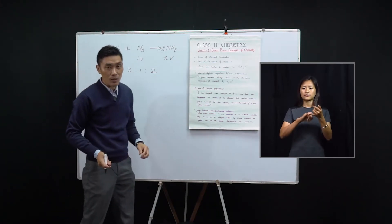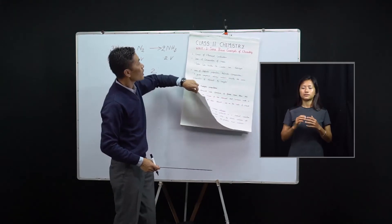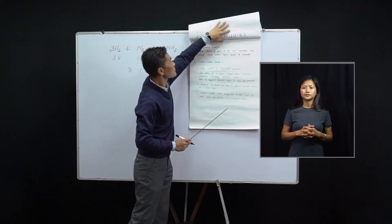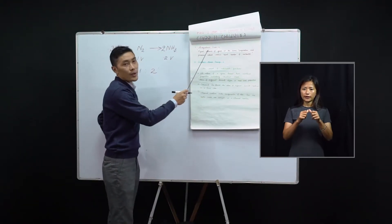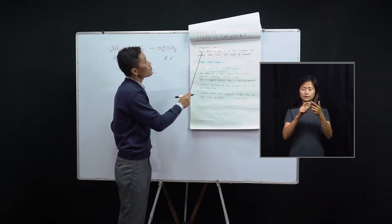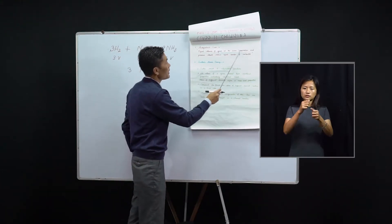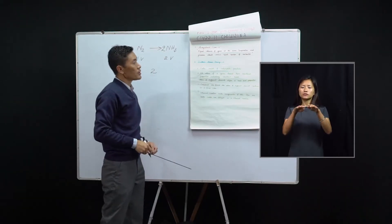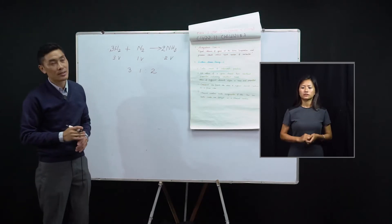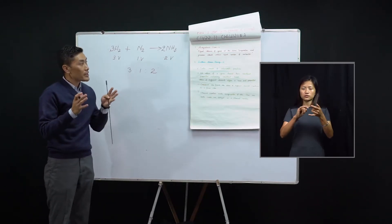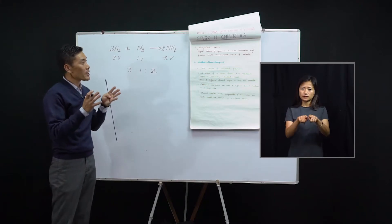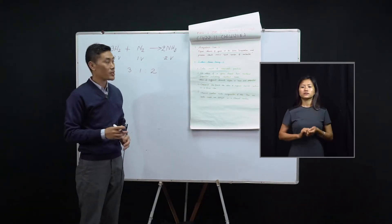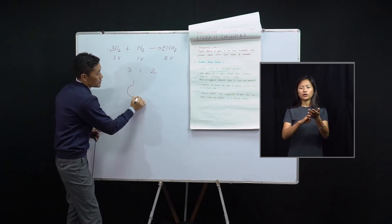The fifth law is Avogadro's law. Avogadro's law states that equal volumes of gases at the same temperature and pressure should contain equal numbers of molecules. So, if we have different types of gases maintained at the same temperature and pressure and we take equal volumes of all these gases, they will contain the same number of molecules. Let us take three containers to understand this.